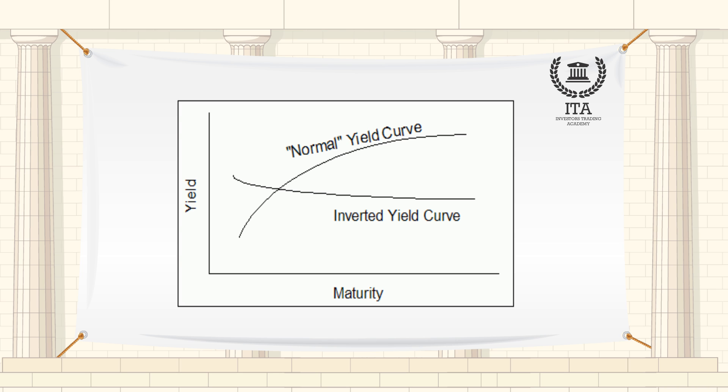A flat yield curve is often seen during the transition from a normal yield curve to an inverted one.